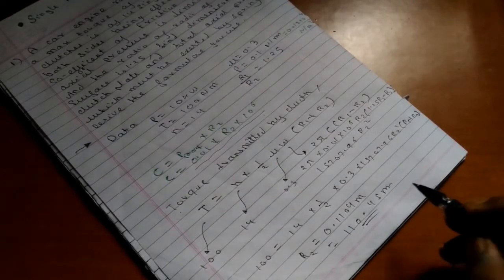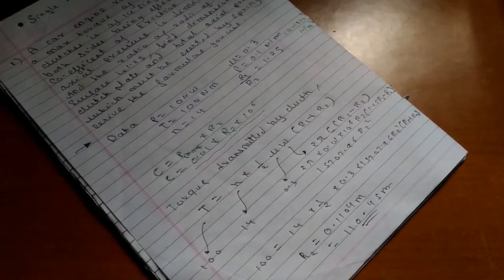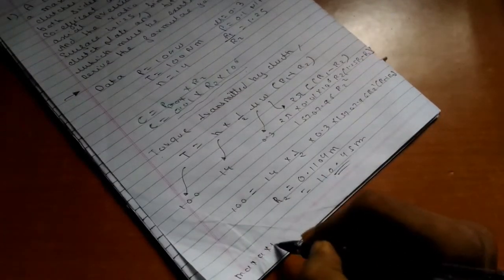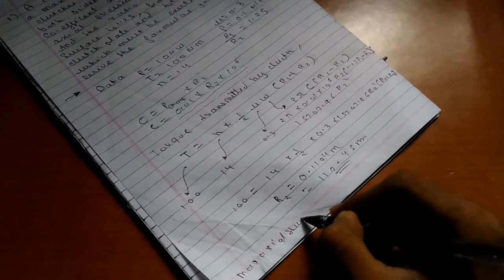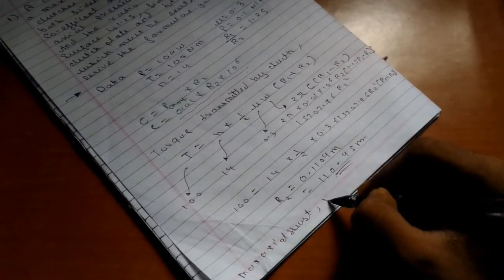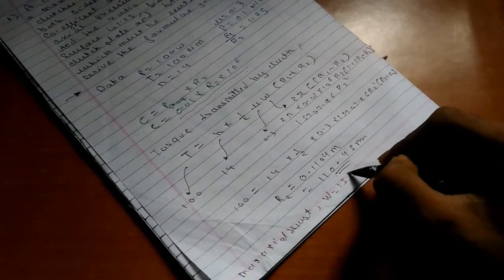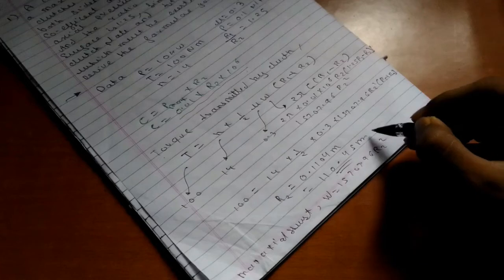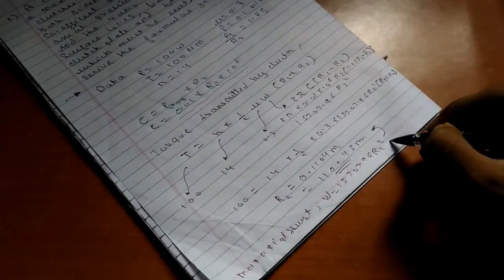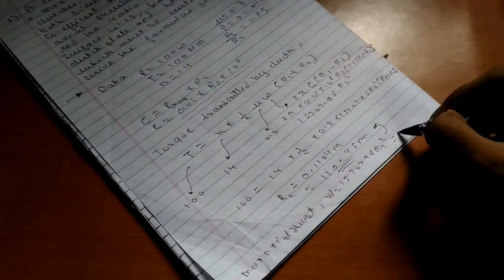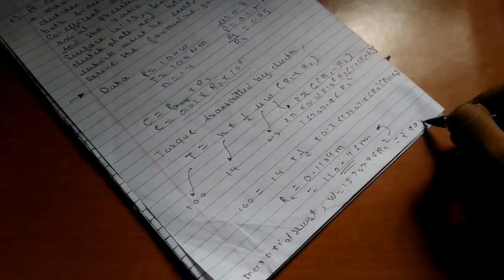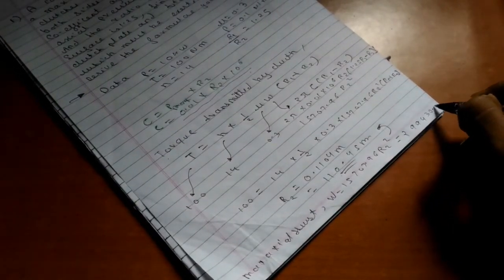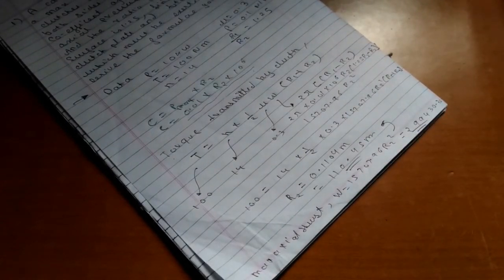The maximum axial thrust can be calculated as W = 15707.96 × r2². After placing this r2 value, we get the maximum axial thrust W = 191.30 Newton. This is the maximum axial thrust we get in this problem.